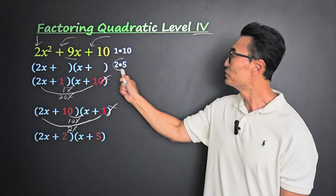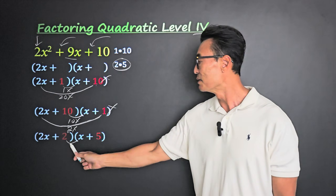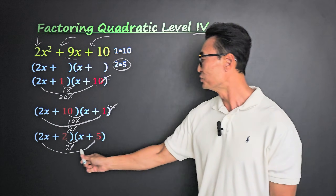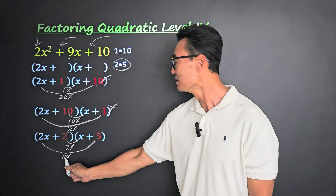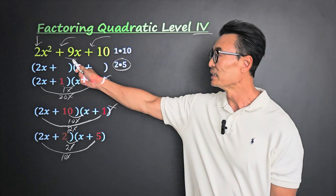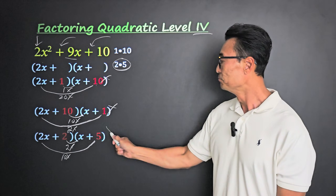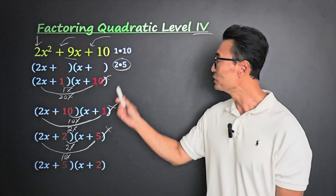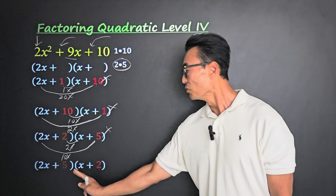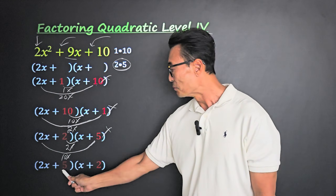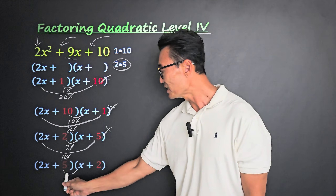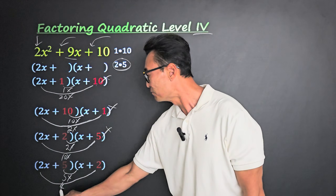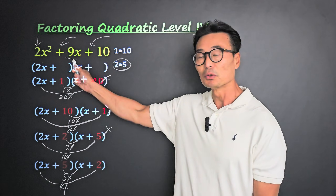Let's try 2 and 5. Putting 2 here gives 2 times x, which is 2x. The outer ones, 2x and 5, give 10x. 10 and 2 gives us 12 — not the 9 we want. Finally, we switch to 5 and 2. Multiplying the inner ones: 5 times x is 5x. And 2 times 2 gives 4x. Adding 5x and 4x gives the 9x that we want.